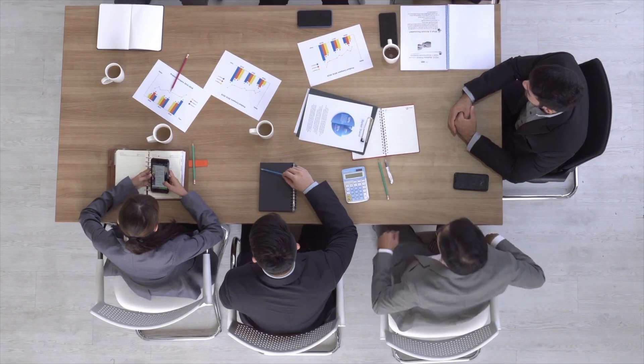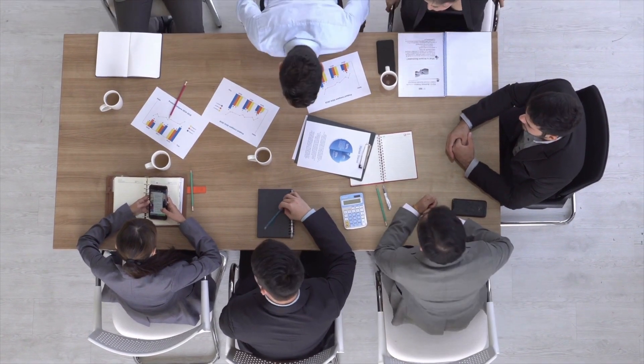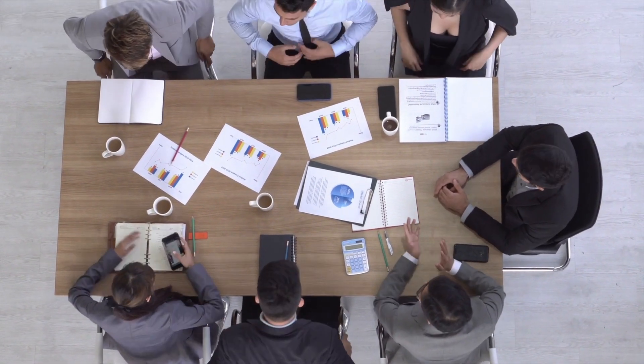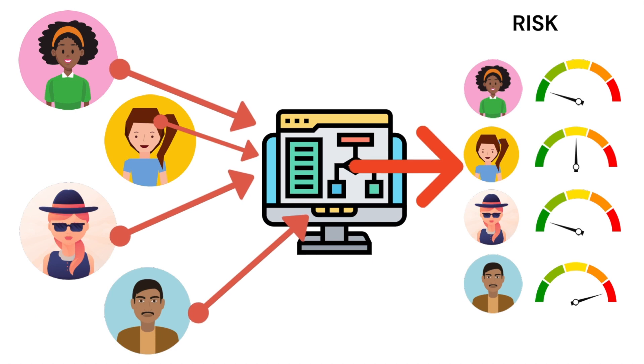Another huge industry that aggressively hires data scientists is the banking industry and fintech. Lots of banks and financial institutions make use of data science for things like risk modeling — how risky is it to loan money out to a certain type of individual or company? All of these things require you to assess the risk of financial transactions, and that's where data science steps in. It looks at a bunch of different factors and determines how high the risk is for a bank to give credit out to certain individuals or institutions.